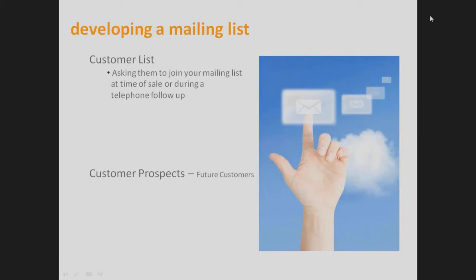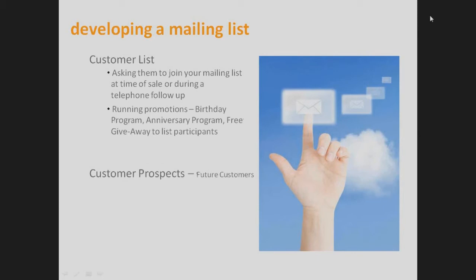During phone follow-ups with customers, you can promote your mailing list. Running promotions such as birthday or anniversary programs is another approach. For example, if you're a flower shop, knowing a customer's anniversary date from this year is valuable for next year. You could schedule all those names to receive an email promotion to buy flowers a year from now. Would that increase your business over time — reminding people their anniversary is coming and offering a discount to buy from you again rather than going somewhere else?